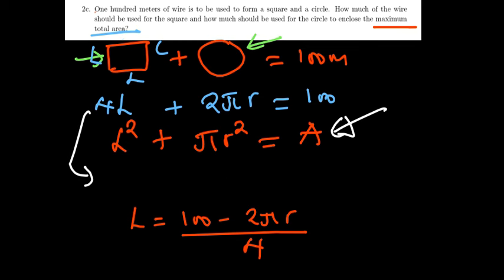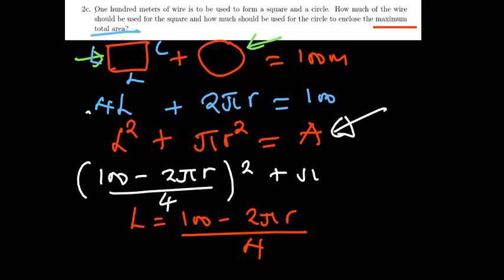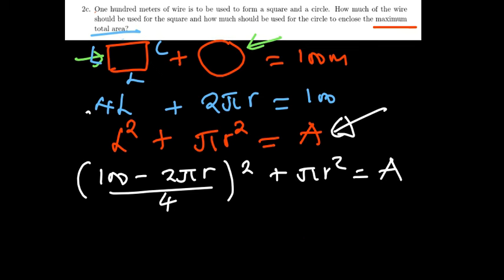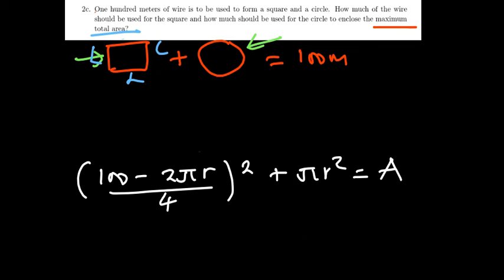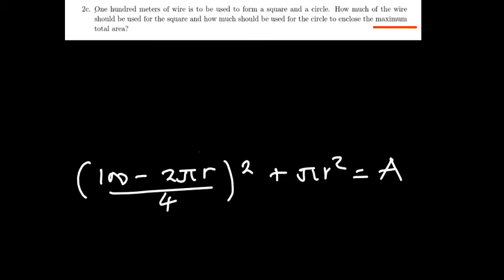We've made L the subject. We can gradually substitute what we have in the area equation. So where we've got our L, we put (100 - 2πr)/4. Now we've come up with our area expressed in terms of the radius. We don't have L there. Now for us to determine the maximum area, you know we have to differentiate. That's very key, very important.